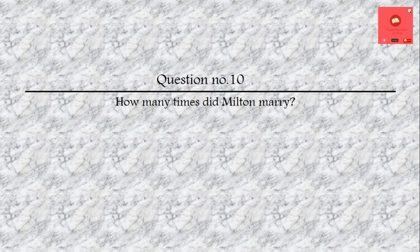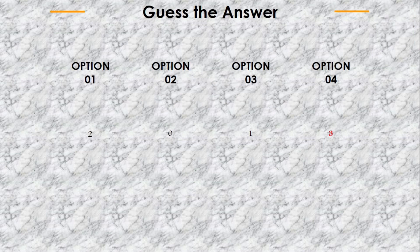Question number 10: How many times did Milton marry? Options are: two times, never married, only one time, or three times. The answer is three times.